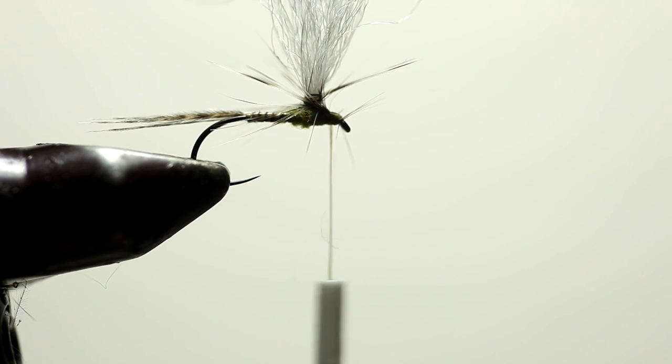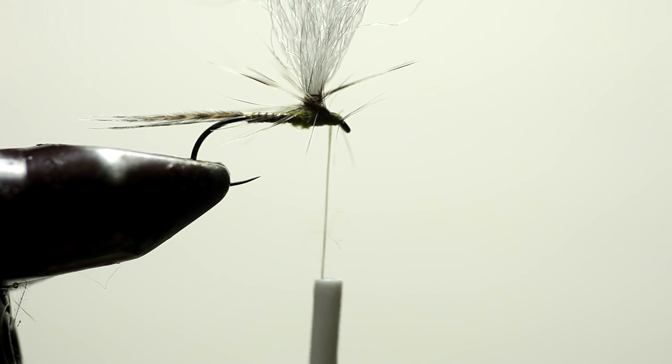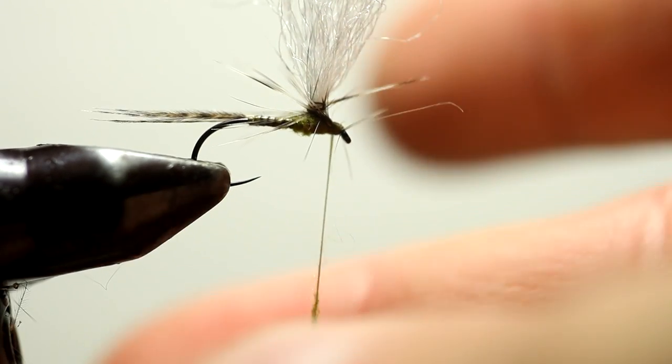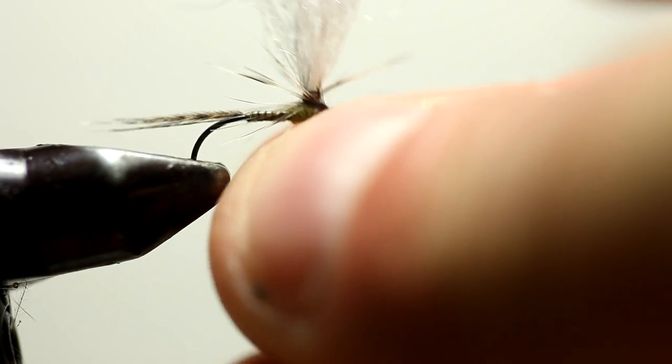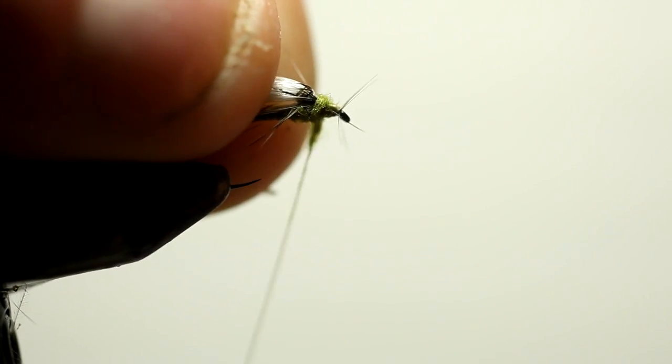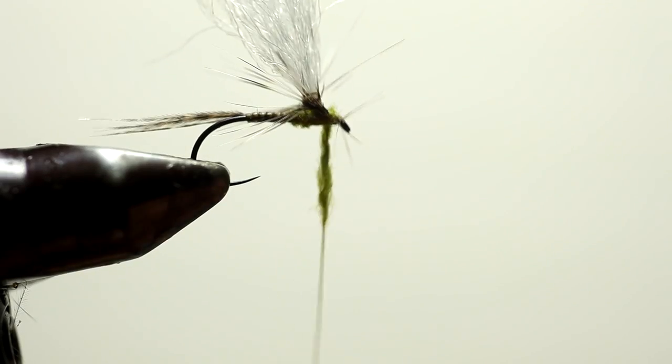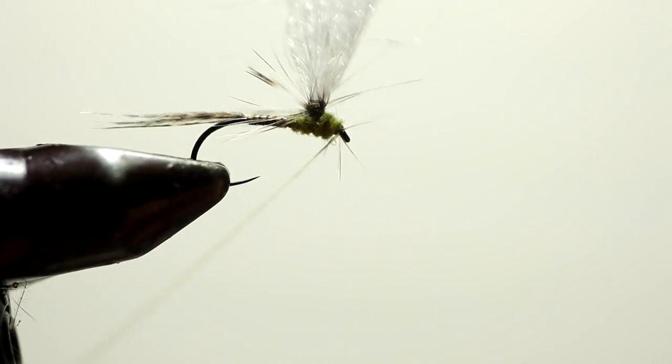So now we're going to come back and put a little more dubbing on the thread. The bluing olive super fine, and dub the front of the fly.